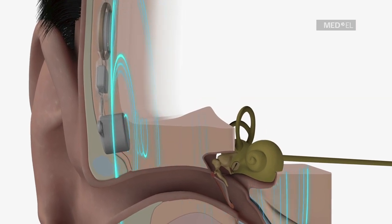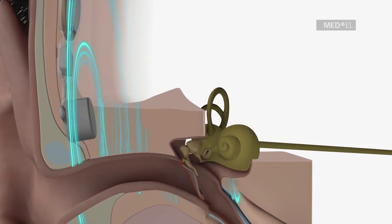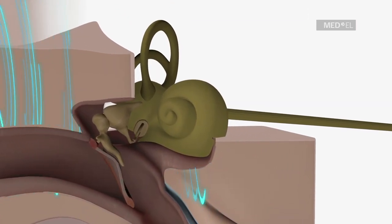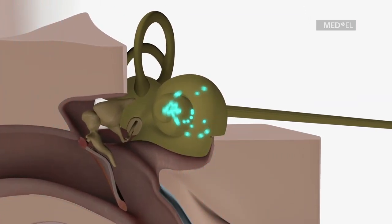Transmitting the signal to the inner ear via bone conduction bypasses hearing loss in the outer and middle ear. The inner ear processes the mechanical vibrations similar to natural hearing and transmits the information to the brain.